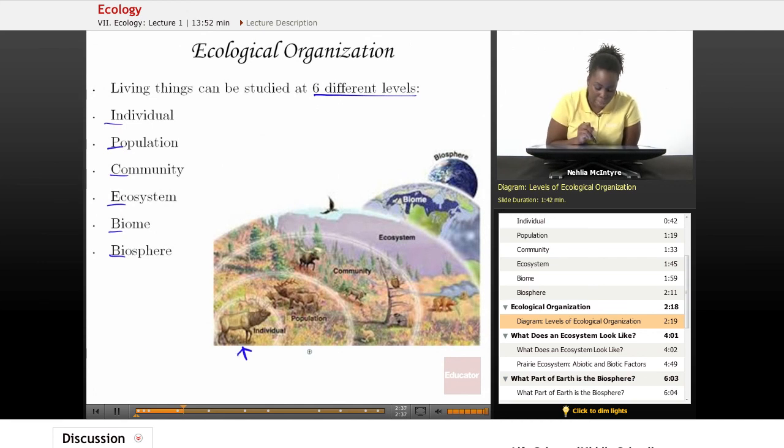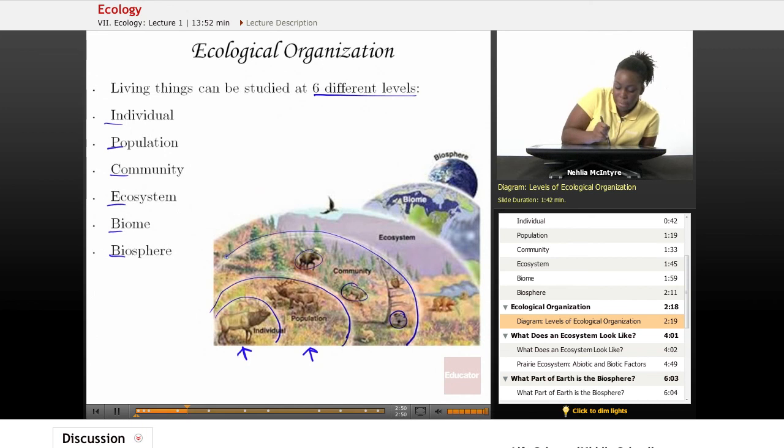And then a population of that same animal would be here. So of course, the population includes the individual. And then if we have different species of animals, then that would be considered a community. And the community includes the different populations of individuals.